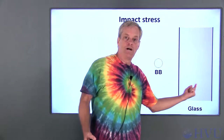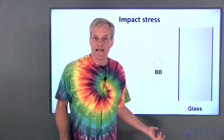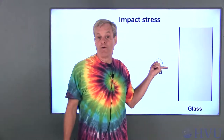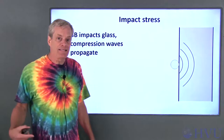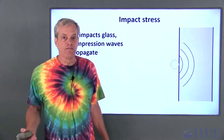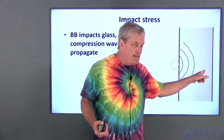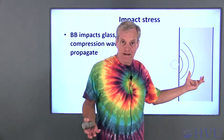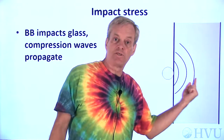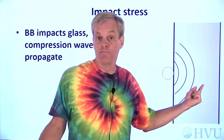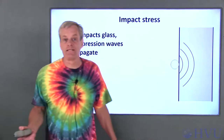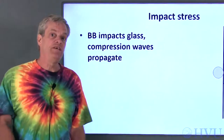This is an edge-on view of the glass pane, and this is my BB. The BB is traveling to the right. It hits the glass really rapidly, so the impact isn't felt instantaneously through the entire thickness of the glass. Instead, the impact sets up stress waves that move through the glass. Ahead of these waves, the glass doesn't know that it's been hit yet.